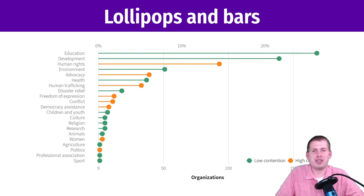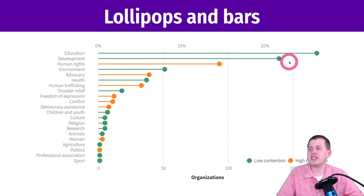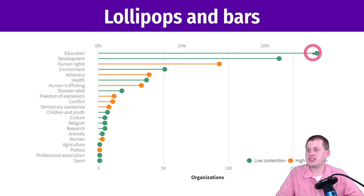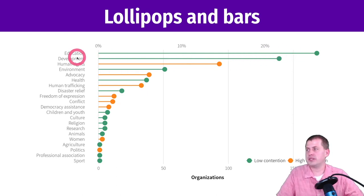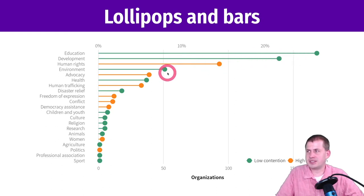This is a plot from my research showing different organizations and what they do in a survey I ran. You can compare the different types of contentiousness of these organizations and how many responded. Even though this is just a bar chart or lollipop chart, it still helps us make comparisons. Most organizations that responded are low-contention organizations dealing with education and development; the biggest high-contention type was human rights organizations.